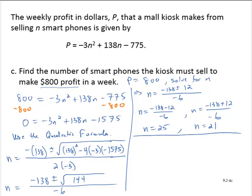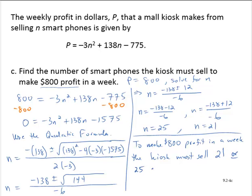So in conclusion, to make $800 profit in a week, the kiosk must sell 21 or 25 smartphones.